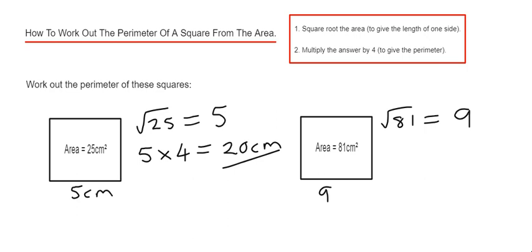That gives us the length of one side. We just need to multiply that answer by four because we have four sides. 9 times 4 is 36 cm, which is the perimeter of the square.